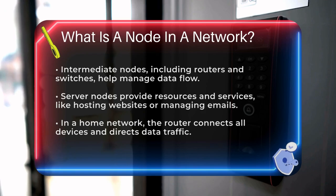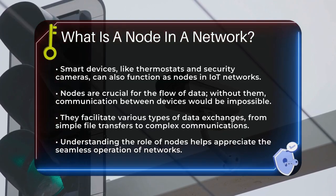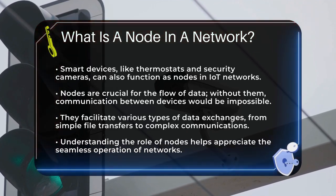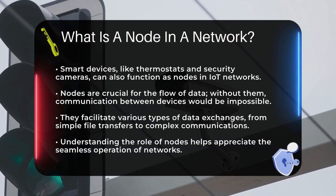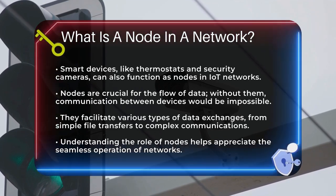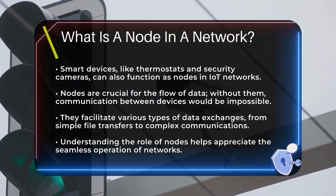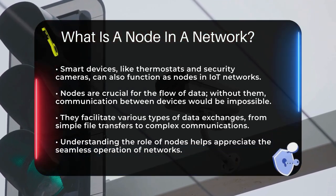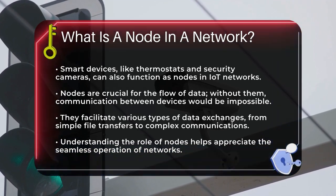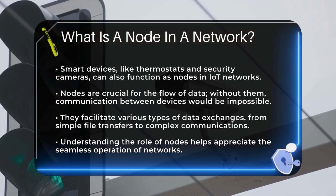Network nodes are essential because they enable the flow of data across the network. Without them, there would be no way for information to travel between devices. So the next time you send an email or stream a video, remember the nodes that make it all possible. In summary, nodes are the backbone of any network, facilitating communication, managing network traffic, and ensuring that data reaches its intended destination. Whether it's a simple file transfer or a complex data exchange, nodes are the key to making it all work seamlessly.